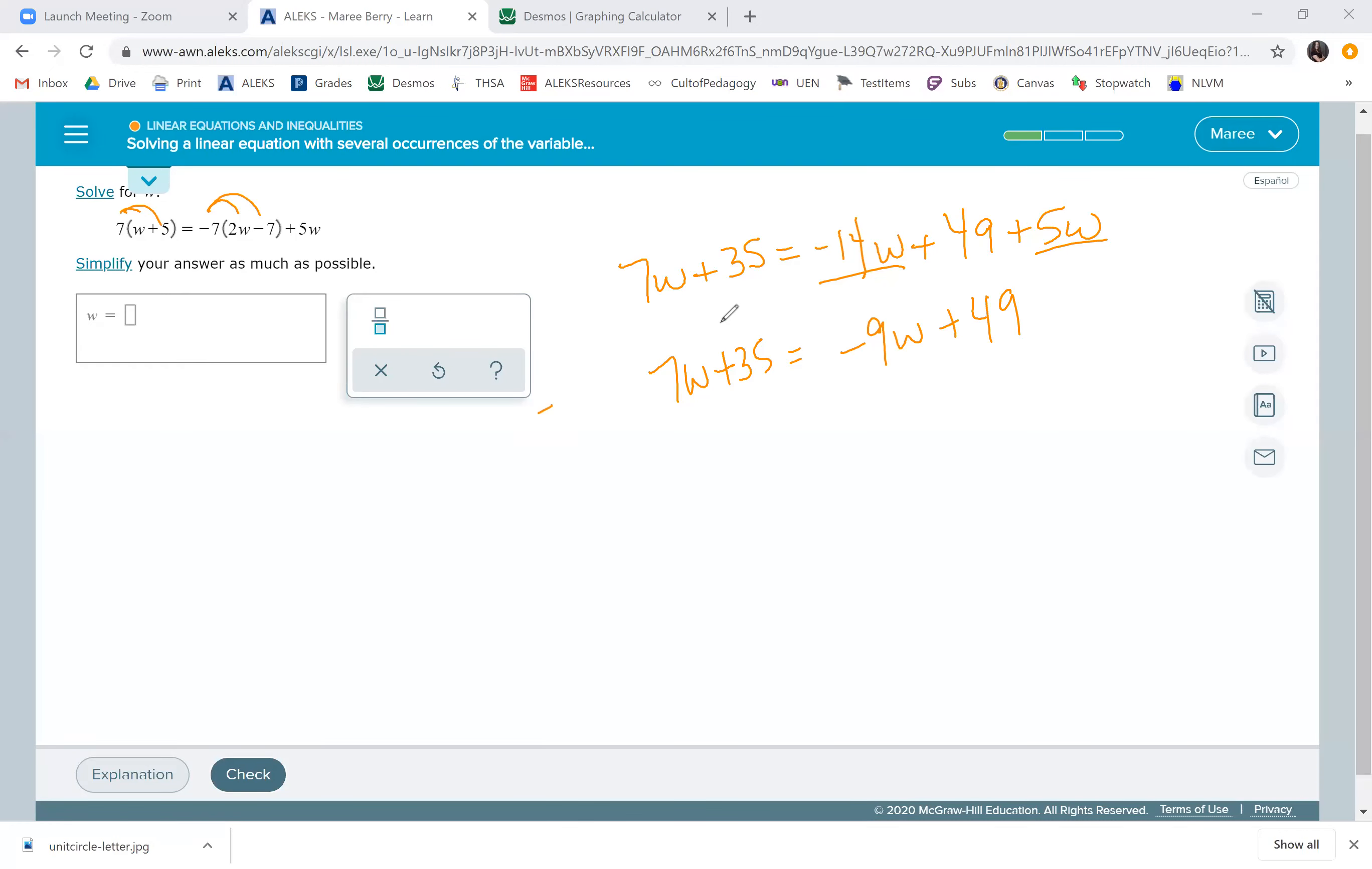I'm going to move the negative 9w over here to get plus 9w, then take this 35 across by subtracting it. 9 plus 7 is 16w, and 49 minus 35 is 14, positive 14.